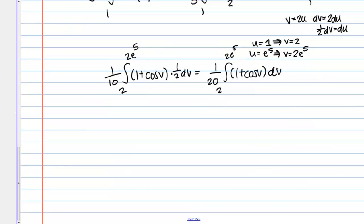Now I can take the antiderivative of that. The antiderivative of 1 is v, and then the antiderivative of cosine is sine, so we have v plus sine v. And I'm going from 2 to 2e to the 5. And those bounds are already in terms of v, so all I have to do is plug in.